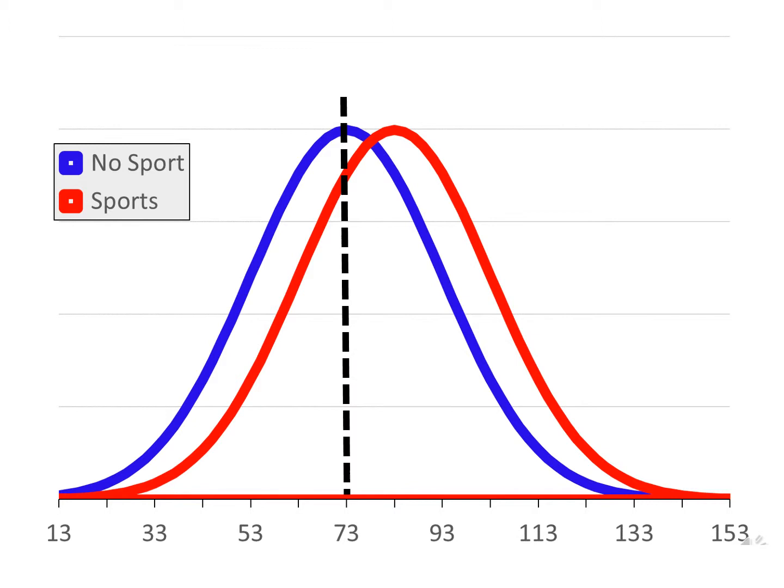Let's replace the raw scores with z-scores — how many standard deviations a student is above or below the mean, based on the No Sports group. A score of 73, which is the mean, would have a z-score of 0. Our standard deviation was 20, so a z-score of positive 1 would be 73 plus 20, or 93, and a z-score of negative 1 would be 73 minus 20, or 53. If we replace the Mason self-confidence scale scores on the x-axis with z-scores, we get this.